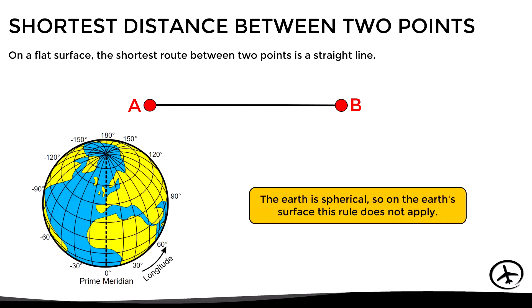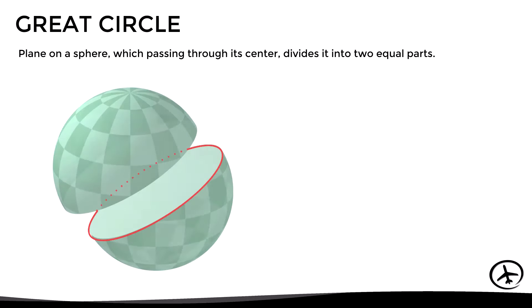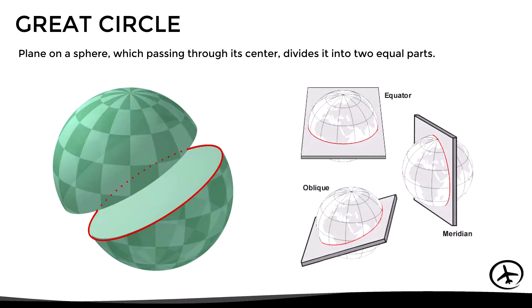To determine the shortest route between two points on Earth, we must first remember the concepts of great circle and small circle. A great circle is a plane on a sphere which, passing through its center, divides it into two equal parts. We can divide the Earth in any direction — as long as it is divided into two equal parts, we will obtain a great circle.